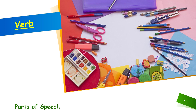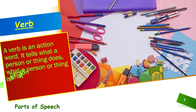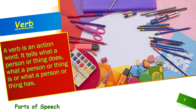Moving on to verbs. A verb is an action word. It tells what a person or thing does, what a person or thing is, or what a person or thing has. Whatever action is taking place in your sentence, that is a verb, and they are very commonly known as action words. Let us take a few examples. 'Do' — I do my work nicely, so 'do' is a verb. 'Eat' — children eat junk food, so 'eat' is a verb.